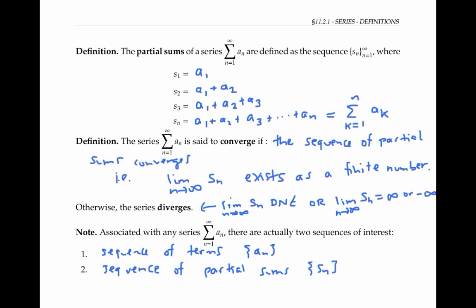So if the sequence of partial sums converges to a number L, then we say the series converges to L — in other words, the sum of the series is L.